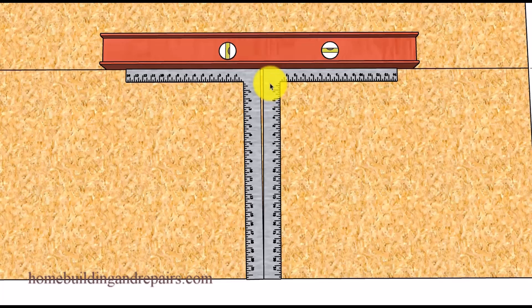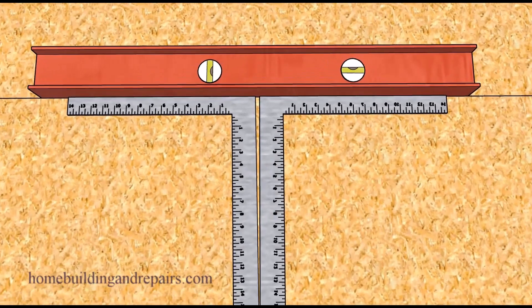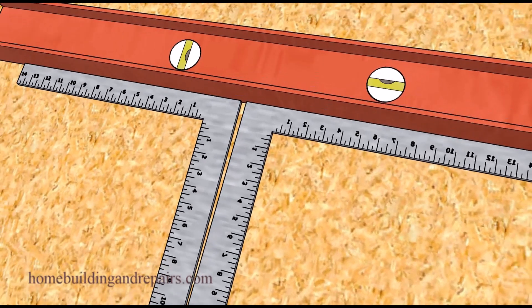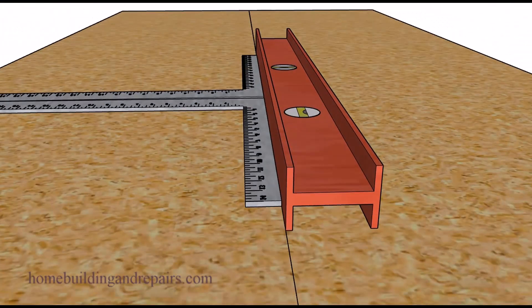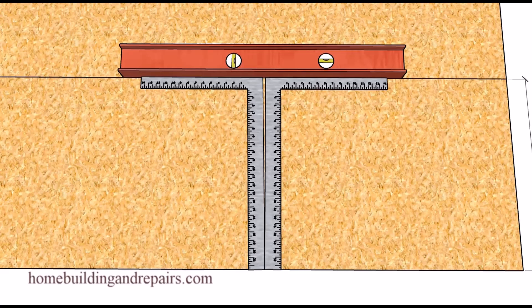I couldn't end the video without providing you with an example of two squares that might not be square. This is not my preferred method because you could have one square that is square and one that is not — and then how would you figure out which one is or isn't square? That leads me back to my original method. The reason I'm showing you this is because I've seen a lot of carpenters use it, but as always, use whichever you feel works best.